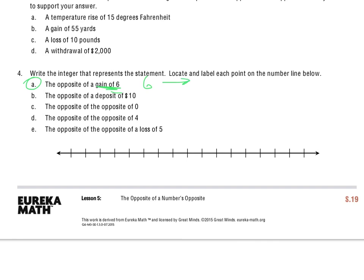The opposite of that is going to be a negative 6, meaning the gain of 6 is 6 jumps or 6 tick marks to the right of 0. So the opposite is 6 tick marks to the left.